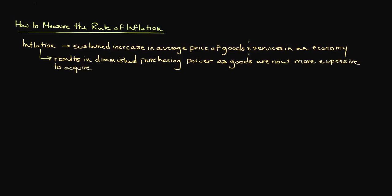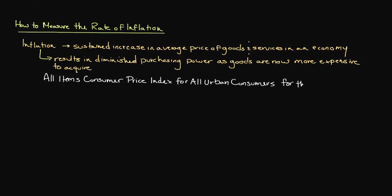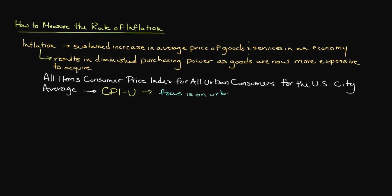Now that we know what inflation is, we need to understand how to measure it. Although there are many different measures of inflation, the most widely cited index is known as the all items consumer price index for all urban consumers for the U.S. city average, commonly abbreviated as CPIU. Often referred to simply as the consumer price index, the CPIU measures the average price of goods and services for urban consumers, which represent approximately 87 percent of the U.S. population.